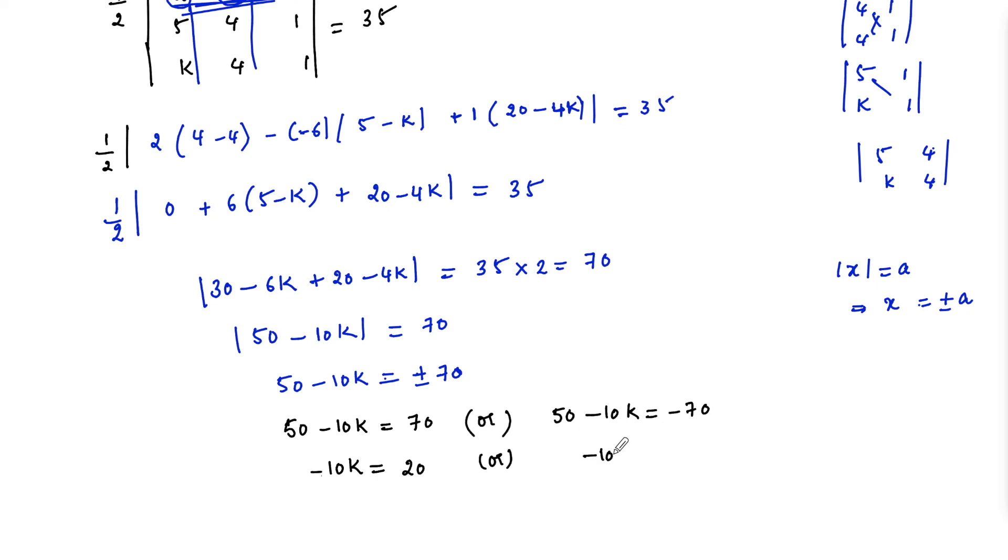Or minus 10k equals minus 70 minus 50 is minus 120. Or k equals 20 upon minus 10 is minus 2, or k equals 120 upon 10 is 12.